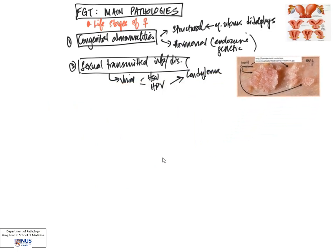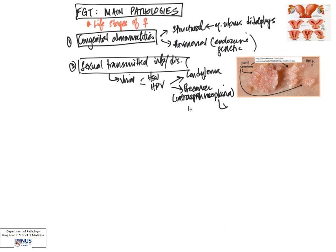A very important condition that HPV is responsible for is a pre-cancerous or pre-malignant condition known as intraepithelial neoplasia. When it occurs in the uterine cervix, it is called cervical intraepithelial neoplasia, or CIN. This can eventually, if not treated, lead to invasive squamous cell carcinoma.